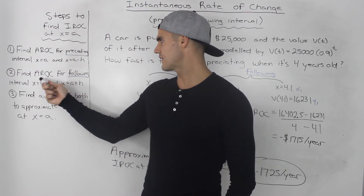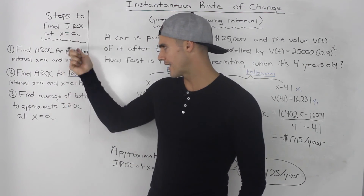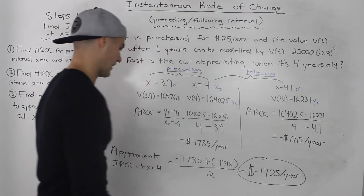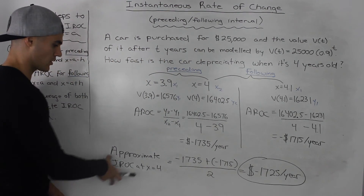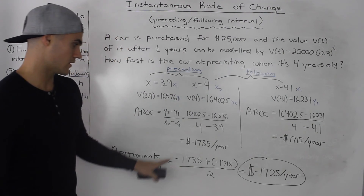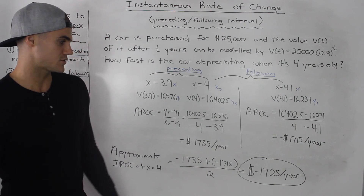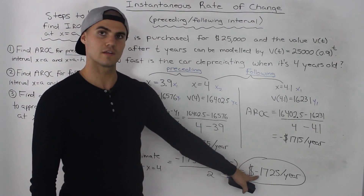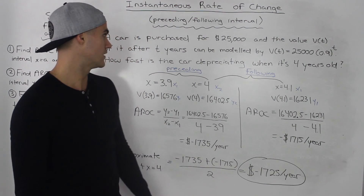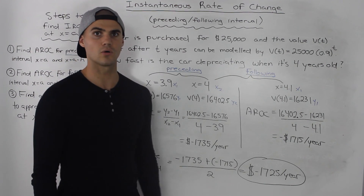Now that we've found the average rate of change for the following interval, we move to Step 3 and average both of them to find the instantaneous rate of change. So the approximate instantaneous rate of change of this car when it's 4 years old: we take the two average rates of change we found, add them together, divide by 2, and we get negative $1,725 per year. That's how fast the car is depreciating when it is 4 years old.